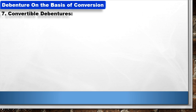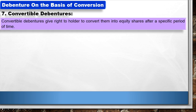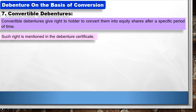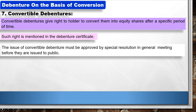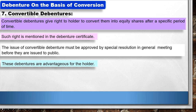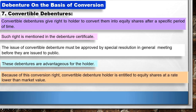Debentures on the basis of conversion. 7. Convertible Debentures: These give the right to the holder to convert them into equity shares after a specific period of time, as mentioned in the debenture certificate. The issue of convertible debentures must be approved by a special resolution in a general meeting before they are issued to the public. Convertible debenture holders are entitled to equity shares at a rate lower than market value.